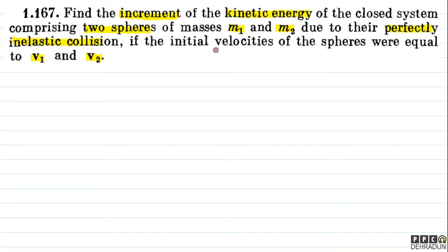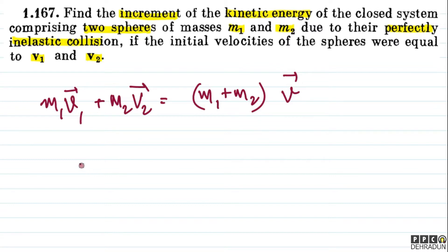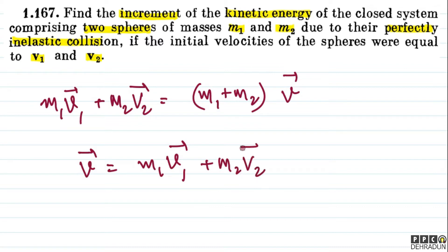We can see that this is a closed system with masses M1 and M2. There is no external force, so the whole system's momentum will be conserved. Therefore, M1·V1 vector plus M2·V2 vector equals (M1 + M2) into V vector. Since it is a perfectly inelastic collision, the two bodies stick together with combined mass M1 plus M2.